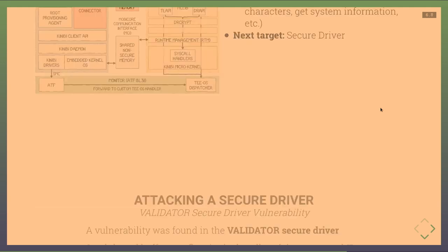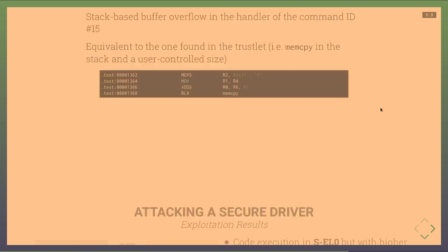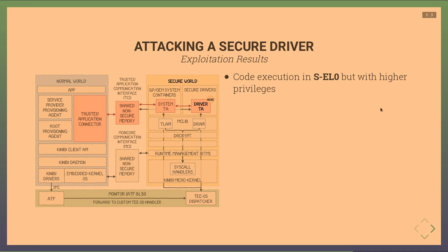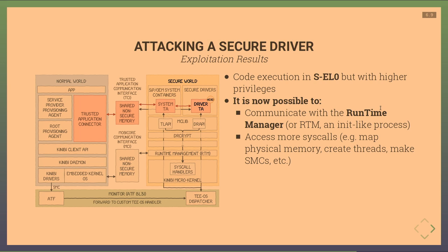The second vulnerability is a buffer overflow in the Validator secure driver, again in the 15th command handler: user-controlled size, user-controlled source, copied directly onto the stack. Exploiting this gives code execution in SEL0 with higher privileges. From here we can communicate with RTM and access more syscalls that perform really sensitive operations — such as mapping physical memory, creating threads, and making SMCs.